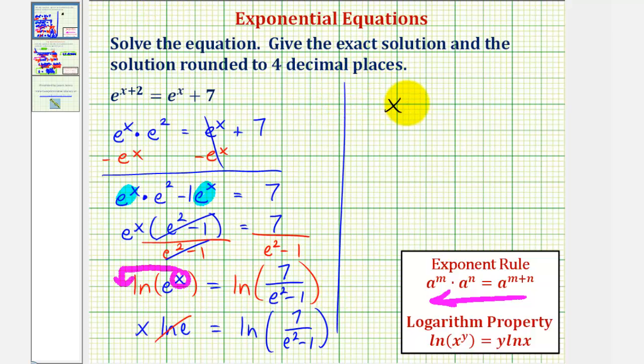The exact solution is x equals natural log of 7 divided by e squared minus 1. Now we'll go to the calculator to get our decimal approximation.